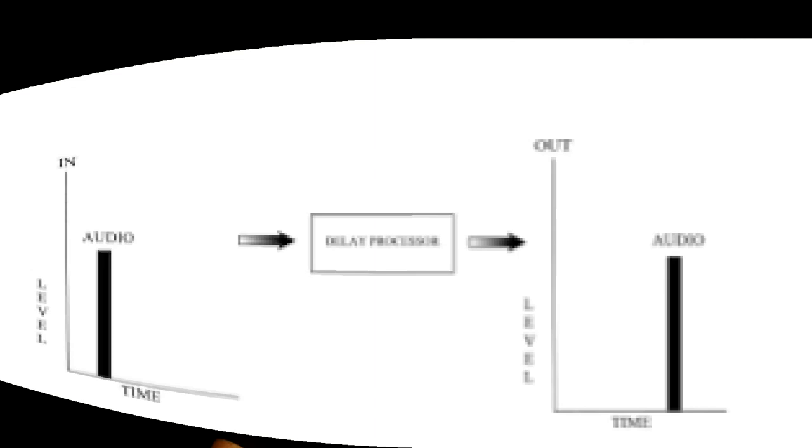Let's talk about delay units — a delay can create a lot of useful effects: chorus, echo, doubling, flanging. Basically you can use a digital delay to create all those things. It records the input signal like a sampler and then plays it back after a preset delay time, which can vary from one millisecond to a minute or more. You always want one with a really high bandwidth — 16 to 20 kHz is great — and the lowest noise floor possible, because delay units are noisy as a rule.